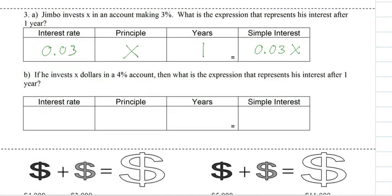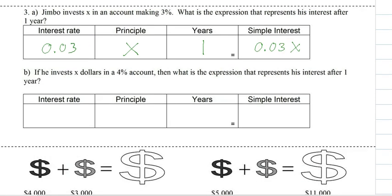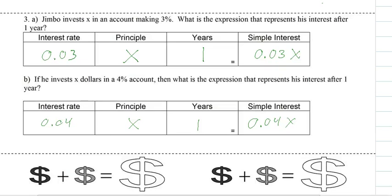Try it for part B — hit pause and give it a shot. That's the simple interest formula and how you use it. You plug in your interest rate and your principal. The time will always be 1 for our problems, so from now on we can ignore it. Once you plug them in, you multiply and it gives us our simple interest.